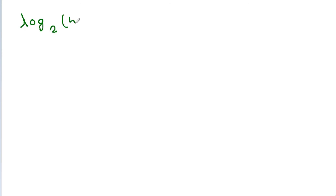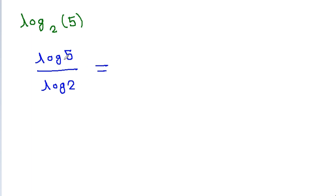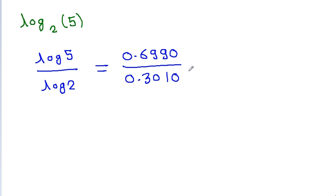If we have to find the value of log base 2 of 5, it will be log 5 divided by log 2. Log 5 is 0.6990 and log 2 is 0.3010. So it is approximately 0.69 divided by 0.3, which equals 2.3.